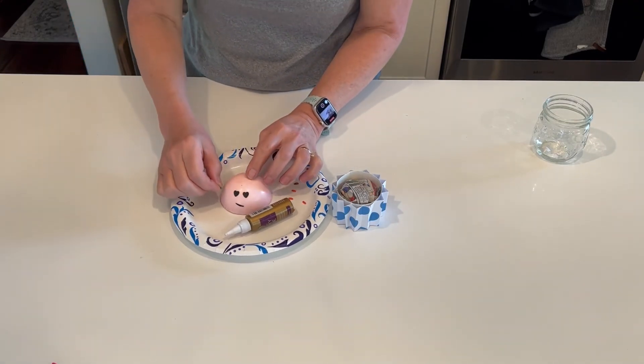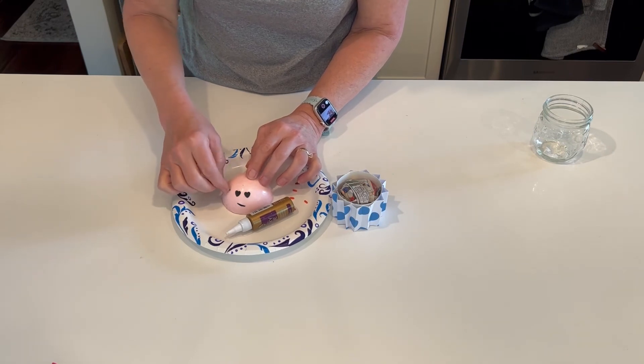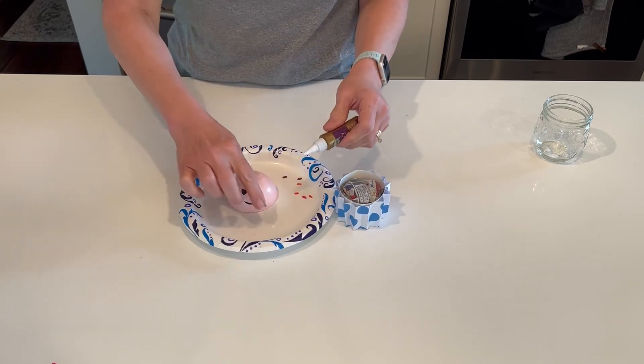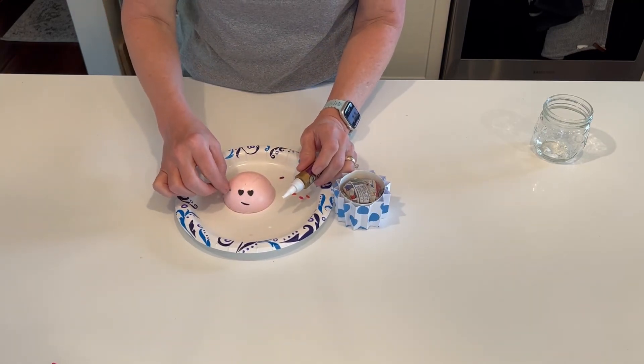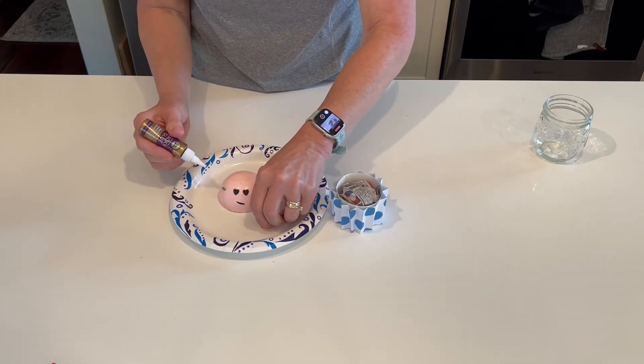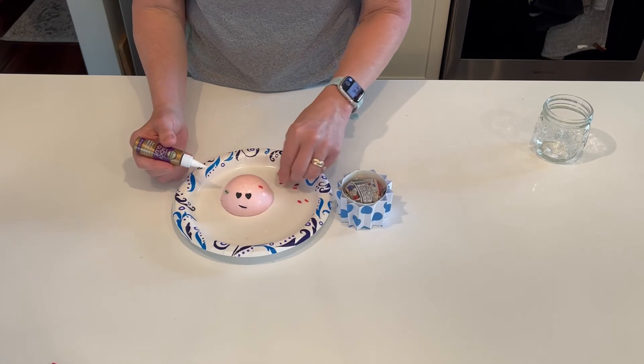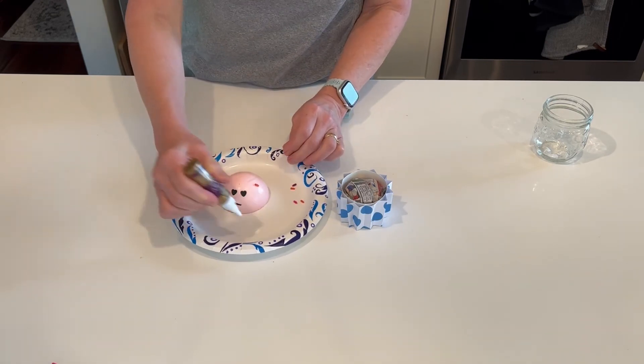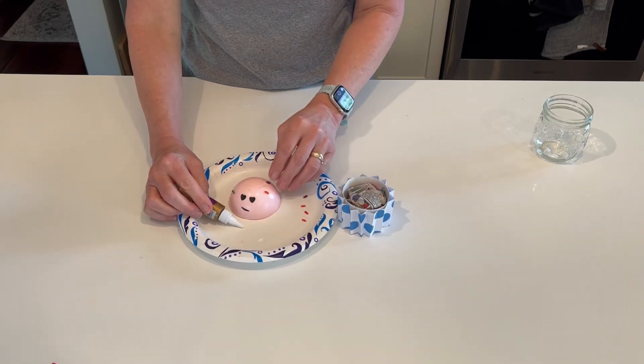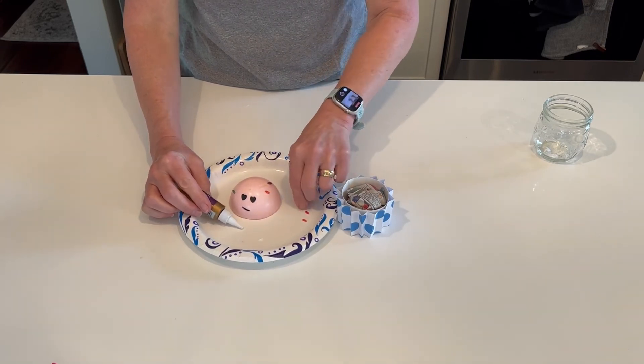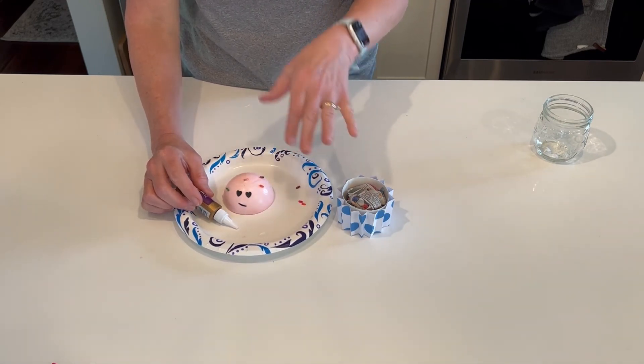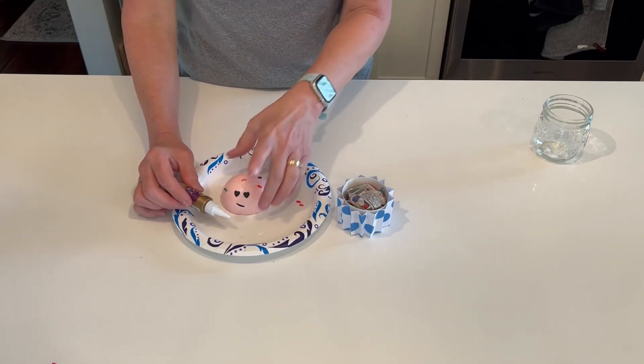And then you can take these, now these wiki sticks are a little sticky on their own so if you just press them in they should stick. But if you're having a hard time like they're not, just give it a little dab. Again you're going to have to let all these guys dry. You can put as many or as few of these on as you want. It kind of just gives it a little bit of a finished look. Maybe now that I put a face on it it's a little bit like hair.